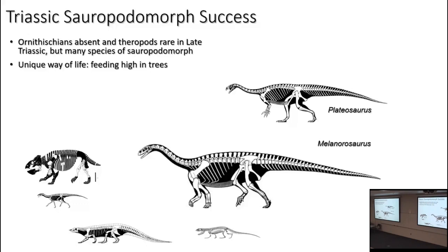Why were sauropodomorphs successful in the Triassic when ornithischians were rare and theropods rare? It was their unique ability to access a food source with no real competition. Shown to scale, a core prosauropod compared to other common herbivores — armored pseudosuchians, a psittacosaurid, a big dicynodont therapsid — none of those forms could rear up. Whereas even without rearing up, something like Melanorosaurus or Plateosaurus can feed higher, and if they do rear up, they can feed extremely high, giving them a much greater feeding envelope.